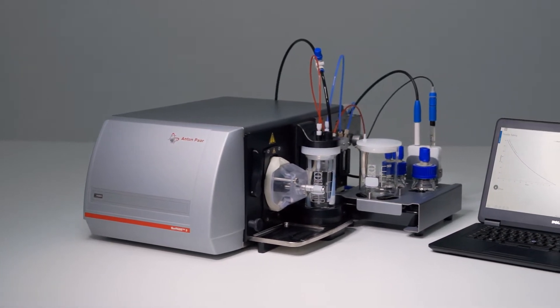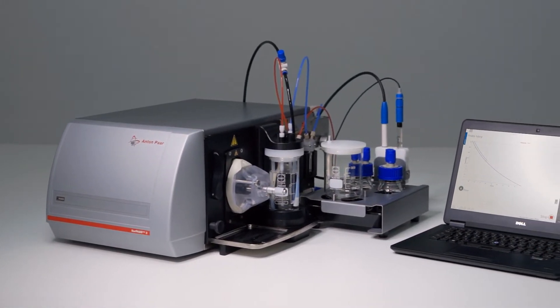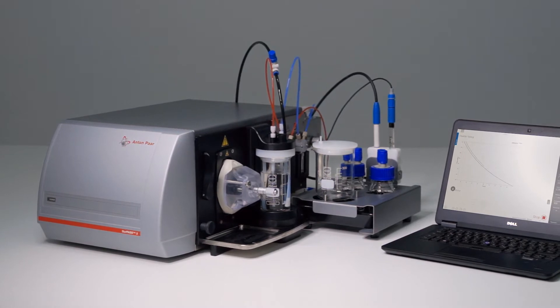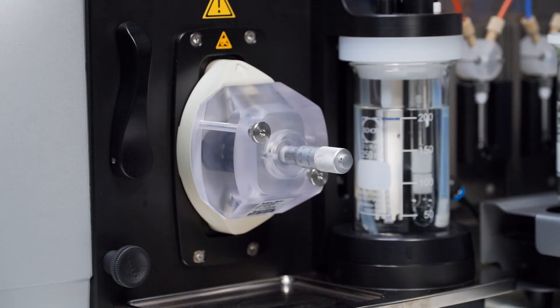This is the measuring cell for flexible tubings for the Surpass III Electrokinetic Analyzer. It's a measuring cell for mounting tubings with different diameters but also for polymer hollow fiber membranes.